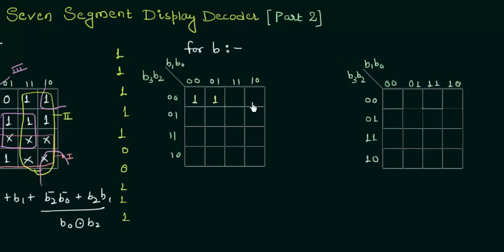And then 1. Then we have two zeros, so 0, 0. Seven is 1, 8 is 1, and 9 is also 1. And the rest of the cells will have the don't cares.